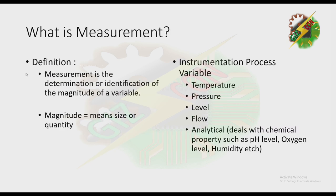Now let's discuss what is measurement. By definition, measurement is the determination or identification of the magnitude of a variable. In instrumentation, we have these five basic variables: temperature, pressure, level, flow, or analytical.